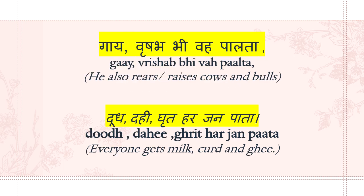Gaay vrishabh vah palata. Doodh dahi ghee harjan pata. Gaay means cow, Vrishabh means bull, and palata means he raises them — so he also raises cows and bulls. Doodh is milk. Everyone gets milk, curd, and ghee because the Krishak raises cows and bulls so that he can give milk, curd, and ghee to everybody.